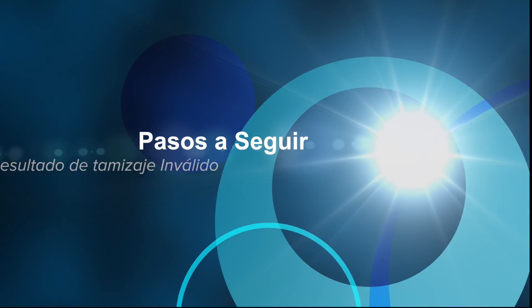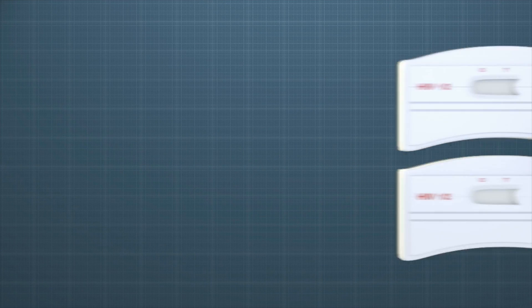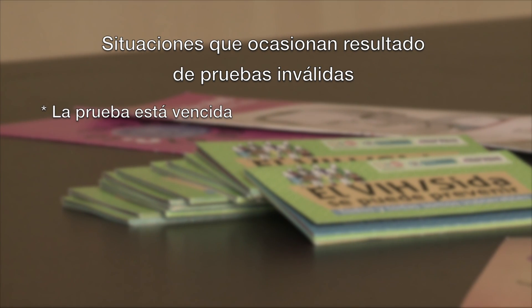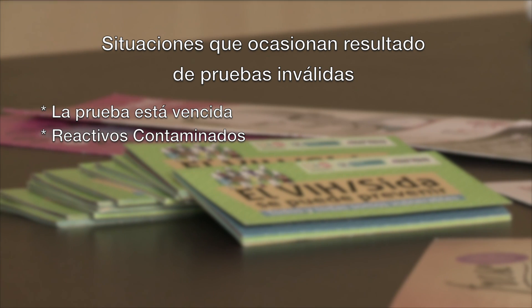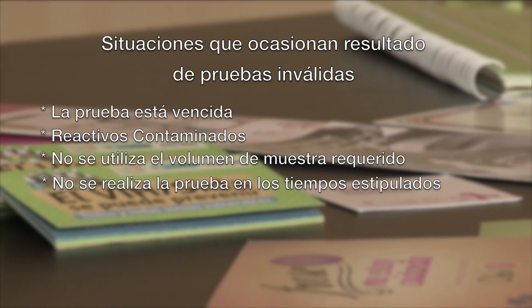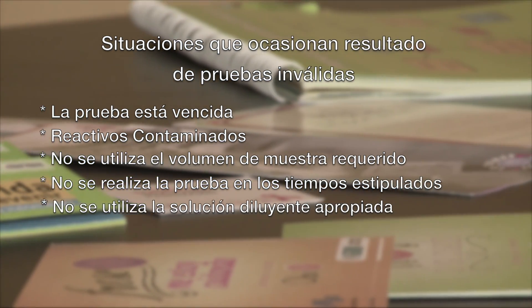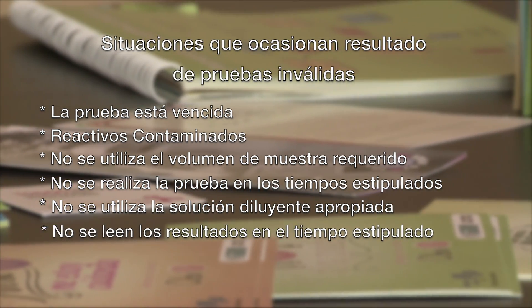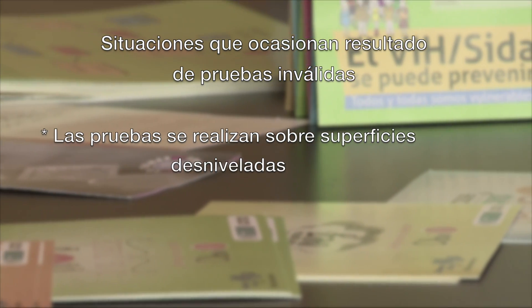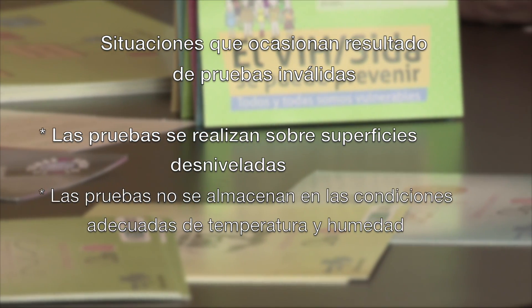Pasos a seguir ante un resultado de tamizaje inválido. Algunas situaciones que con más frecuencia ocasionan resultados inválidos son: la prueba está vencida; reactivos contaminados; no se utiliza el volumen de muestra requerido; no se realiza la prueba con los tiempos estipulados por el fabricante; no se utiliza la solución diluyente apropiada; no se leen los resultados en el tiempo estipulado por el fabricante; las pruebas se realizan sobre superficies desniveladas; las pruebas no se almacenan en las condiciones adecuadas de temperatura y humedad.